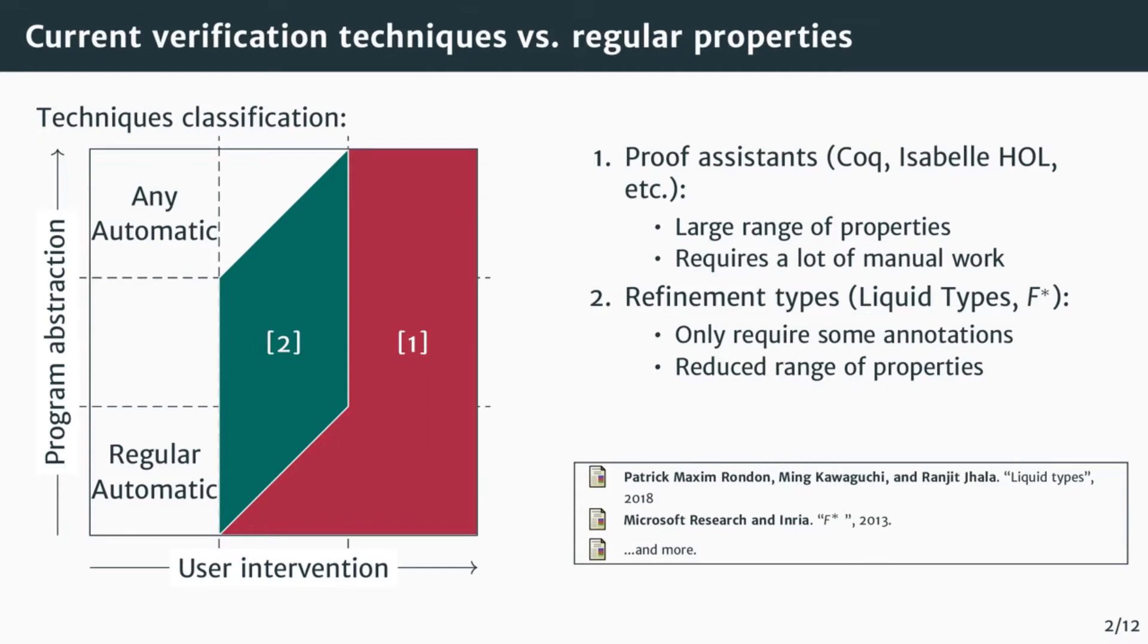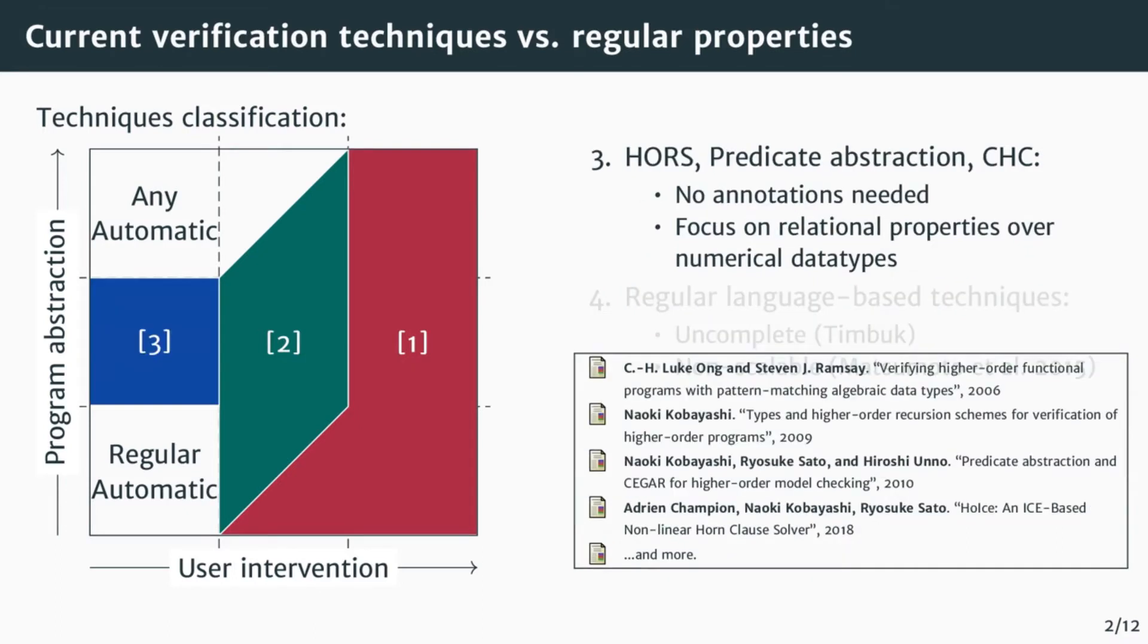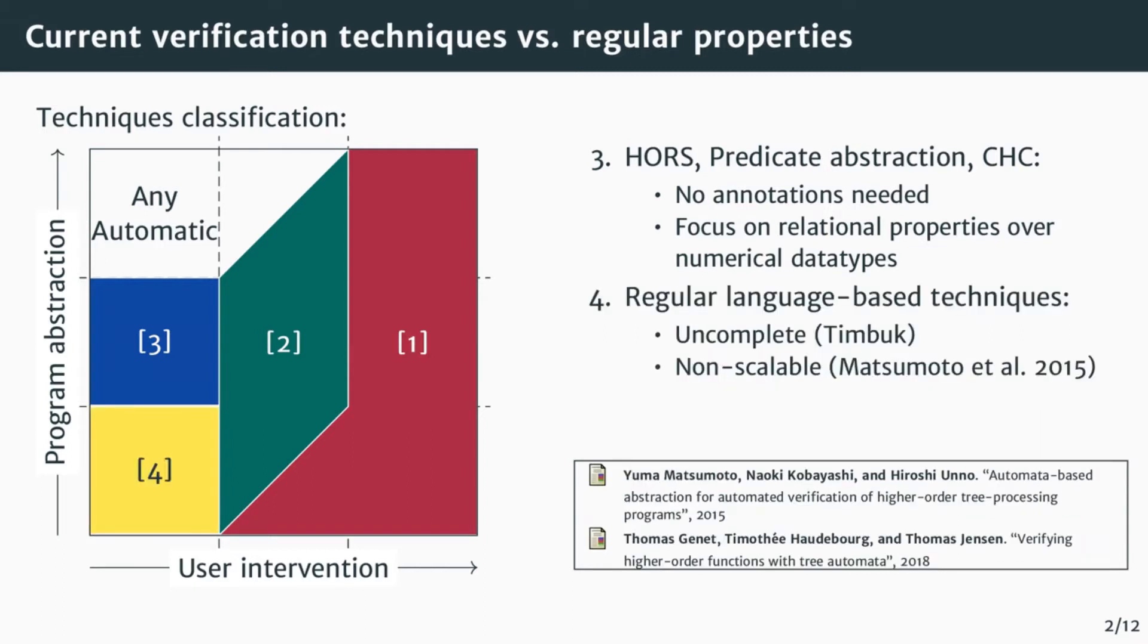Fully automated techniques have been developed around higher-order model checking, predicate abstraction, and more. These techniques do not require any annotations, but mainly focus on relational properties over numerical data types, and are generally not good at verifying regular properties over algebraic data types. There have been some attempts in the fully automatic verification of regular properties, including our previous work Timbuk. However, these techniques are incomplete and not scalable.